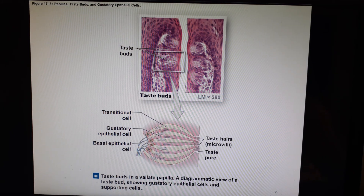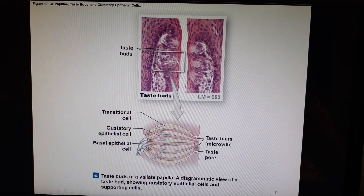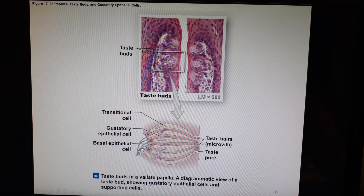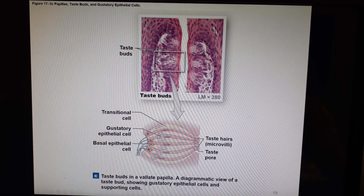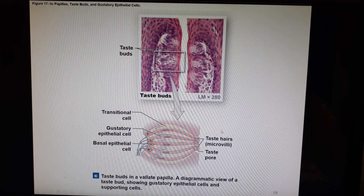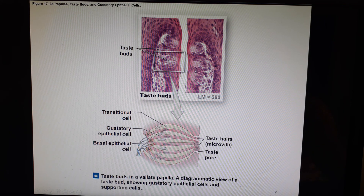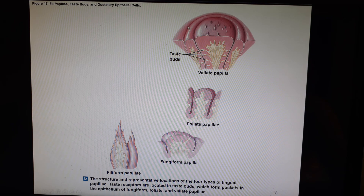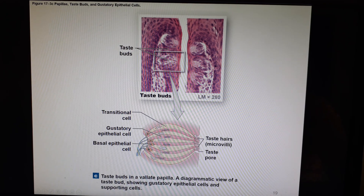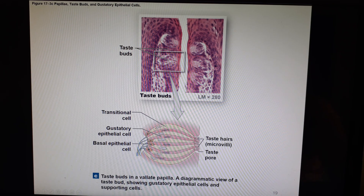Here is a photomicrograph of the actual taste bud. With an even better microscope you would notice the little microvilli — the taste hairs — sticking out through the taste pore. Just like in the nose, the chemical to be detected gets dissolved, this time in saliva. The saliva drives it down into the cracks and applies it to the taste hairs, where we have the receptors. Different tastants will open different ion channels and cause some G-protein coupled receptors to create generator potentials.